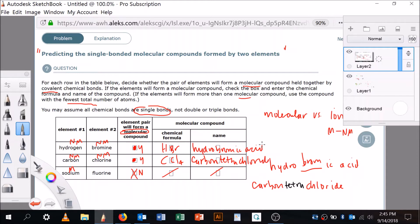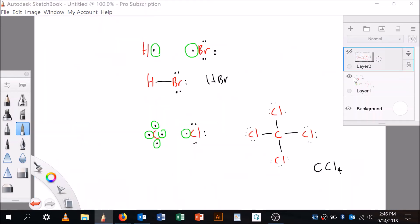All right, so we have now predicted the single-bonded molecular compounds formed by two elements. First of all, we found that you don't have a molecular compound if you have a metal. So it's going to be a big no. And then if you don't have a metal, then yes, you do have molecular compounds.